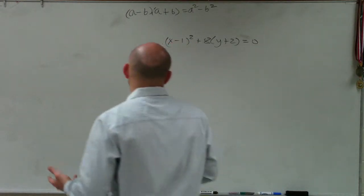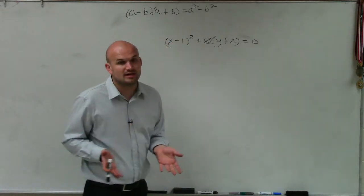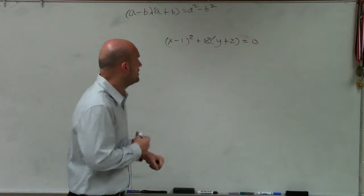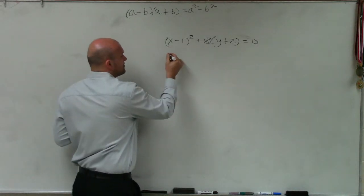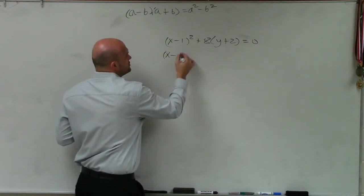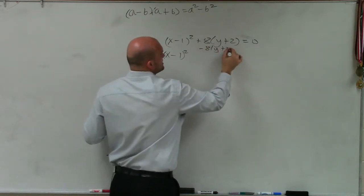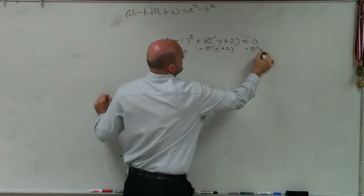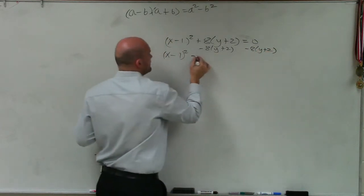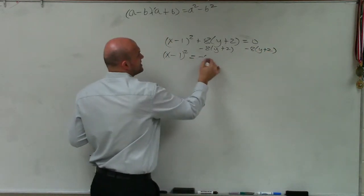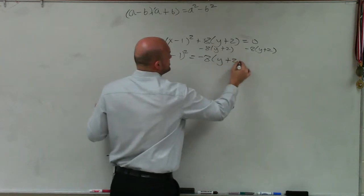So the first thing I want to do is make sure this is in the format that I'm looking for. So I'm going to isolate my squared term. To do that, I'm going to have to subtract this whole expression. So I subtract from both sides. And therefore, I get x minus 1 squared equals negative 8 times y plus 2.